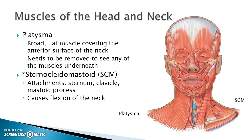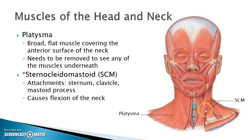Then we have the sternocleidomastoid, or SCM for short. This muscle is named for its attachments: sterno referring to the sternum, kleido referring to the clavicle, and these two join and attach to the mastoid process right behind the ear. When it contracts, it causes flexion — the mastoid process comes down closer to the sternum, producing a lateral and forward flexion motion. You can feel this yourself: the V at the base of your throat is made by these sternocleidomastoid muscles.